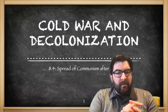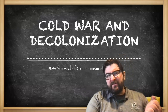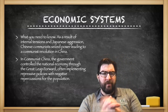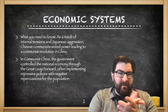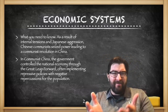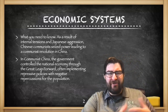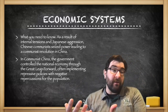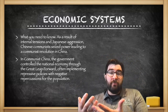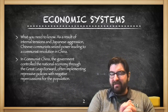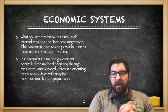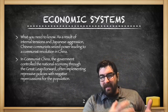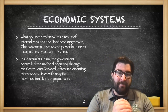We are back at it and we're going to tackle 8.4, the spread of communism around the world after 1900. Here's what you need to know. As a result of internal tensions, a civil war, and Japanese aggression during World War II, the Chinese communists led by Mao Zedong will seize power in 1949, making China a communist nation.